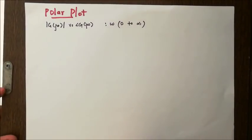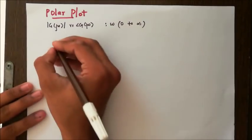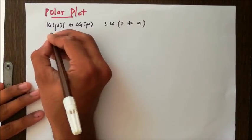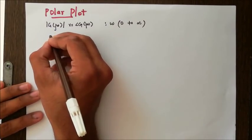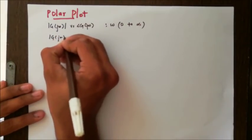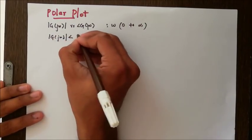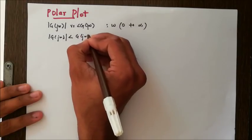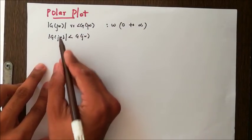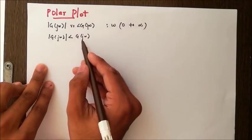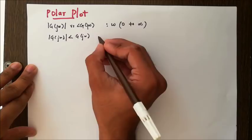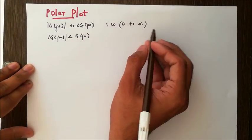Thus the Polar Plot can also be explained as the locus of vectors G(jω) ∠G(jω) — that is a vector with magnitude of G(jω) and phase angle of G(jω) — plotted on a graph as omega is varied from zero to infinity.